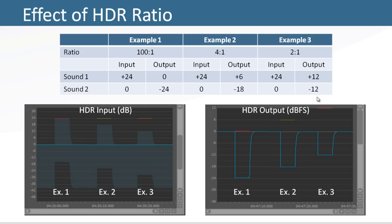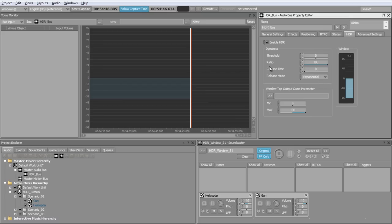Notice that the level difference of 24 dB between sound 1 and sound 2 is preserved across the three examples. Finally, the release time and release mode properties define how the HDR window recovers to a lower value when no sound is playing above the threshold. You can use the release time to reduce artifacts like pumping, for example.